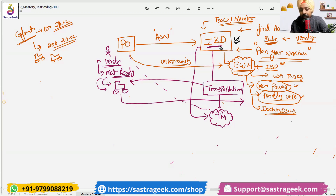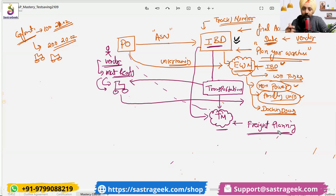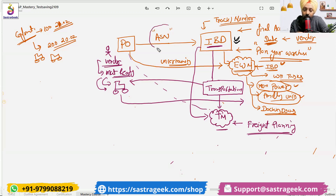This IBD can then integrate with your SAP TM modules. We have used and delivered this scenario in one client in South Africa — they plan their trucks to pick up materials from the vendor. So we need the IBD information; the IBD is created based on the advanced shipping notification from the vendor that the material is ready, and then we use the inbound delivery to plan the trucks in TM.